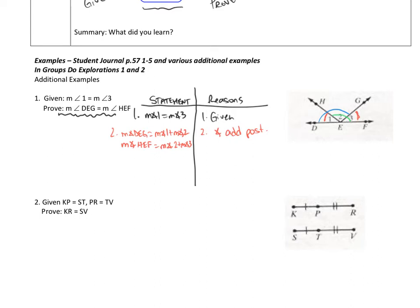Now let's look at what we were given again: angle 1 equals angle 3. Since those two are equal, I'm going to substitute angle 3 in for angle 1. So that means the measure of angle DEG equals the measure of angle 3 plus the measure of angle 2. And this was substitution.